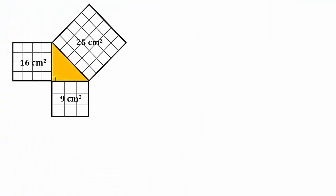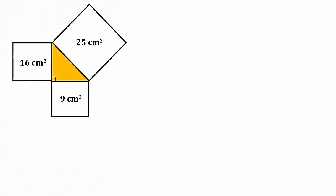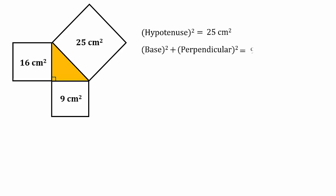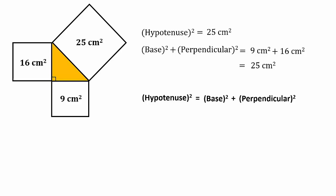Now that we know the areas of the squares at each side, we can check if the Pythagoras theorem holds true. The area of the square at the hypotenuse is 25 cm². Is this equal to the total area of the other two squares? Adding the area of the square at the base, 9 cm², to the area of the square at the perpendicular, 16 cm², we get 25 cm².